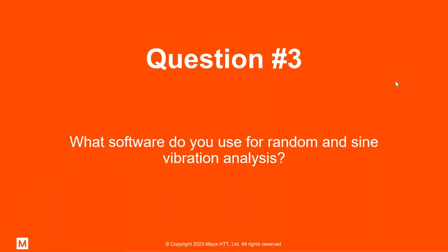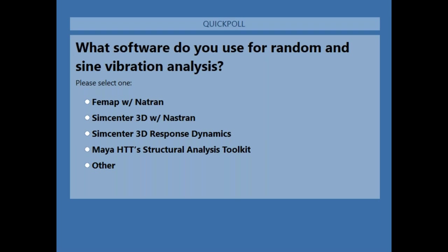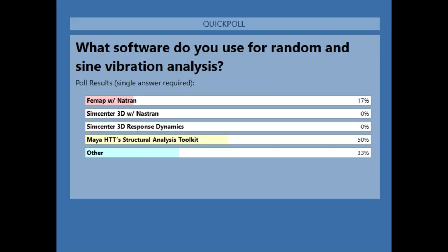We'll do one more question here before we jump into the demo. I want to ask what software do you use for random or sine vibration analysis? Obviously here at Maya, we are primarily using Simcenter 3D, Nastran, FEMAP. I'm curious to see what, always curious to see what everyone else has used as well. I've used Ansys in the past. I'll give it a few more seconds as people click in results, then we'll close the poll.